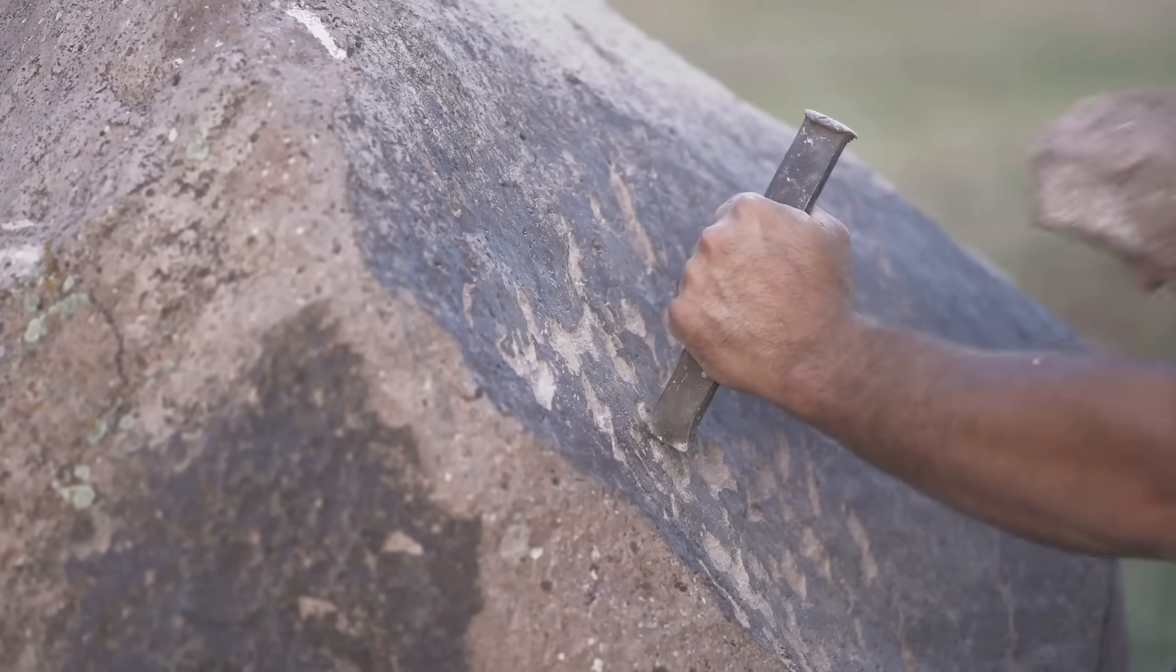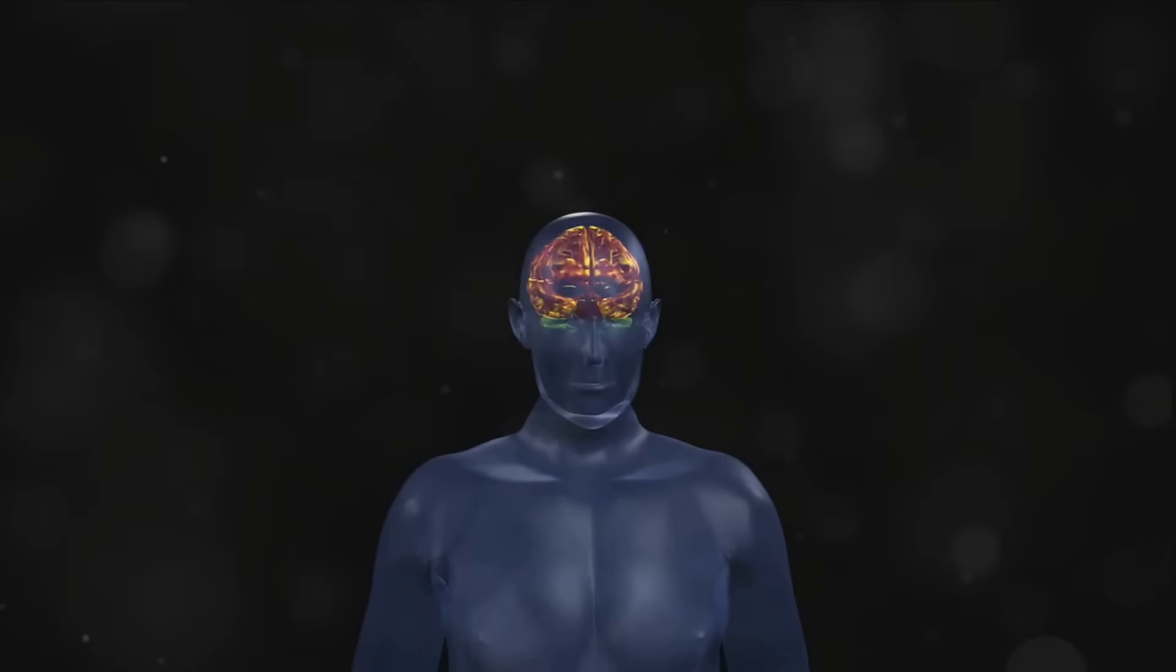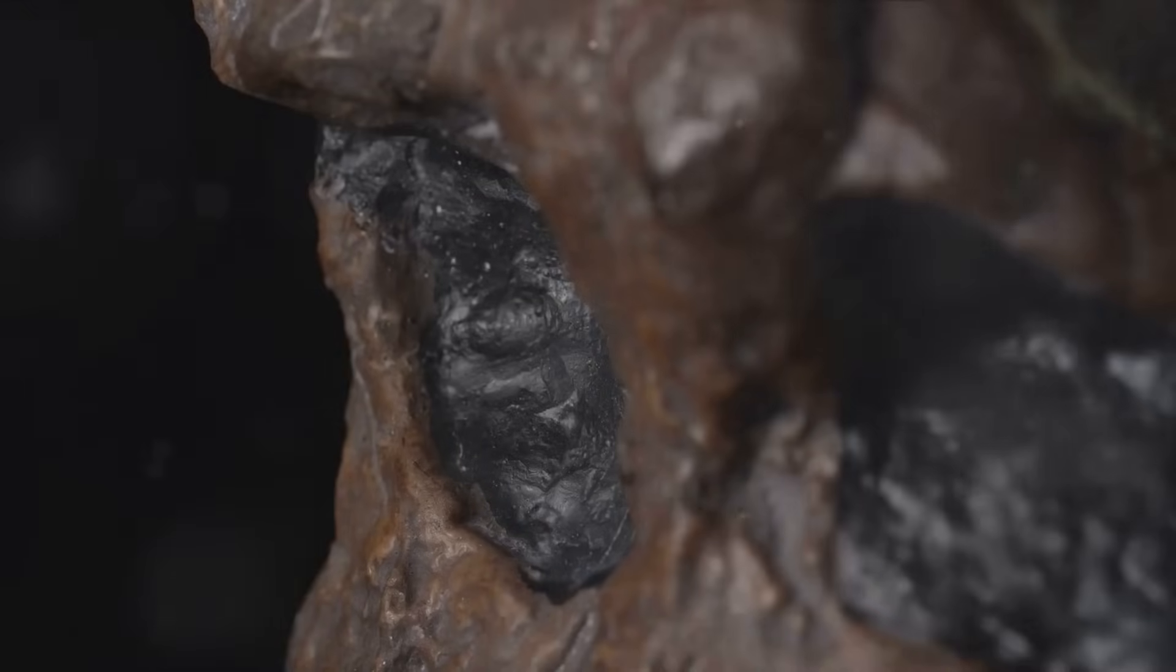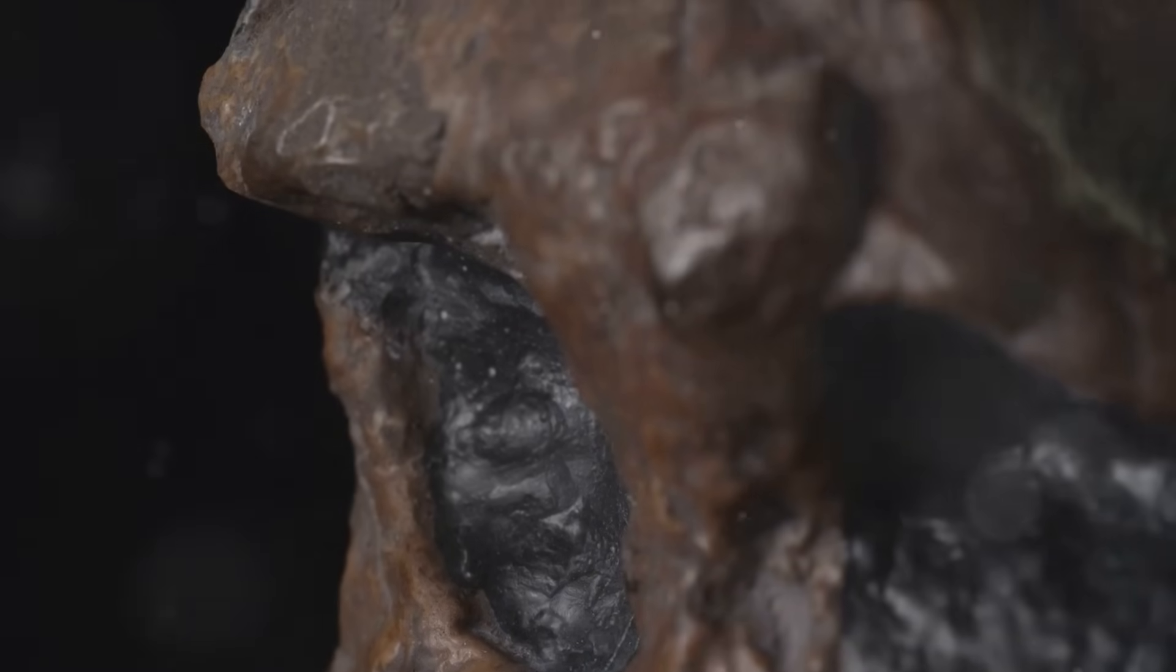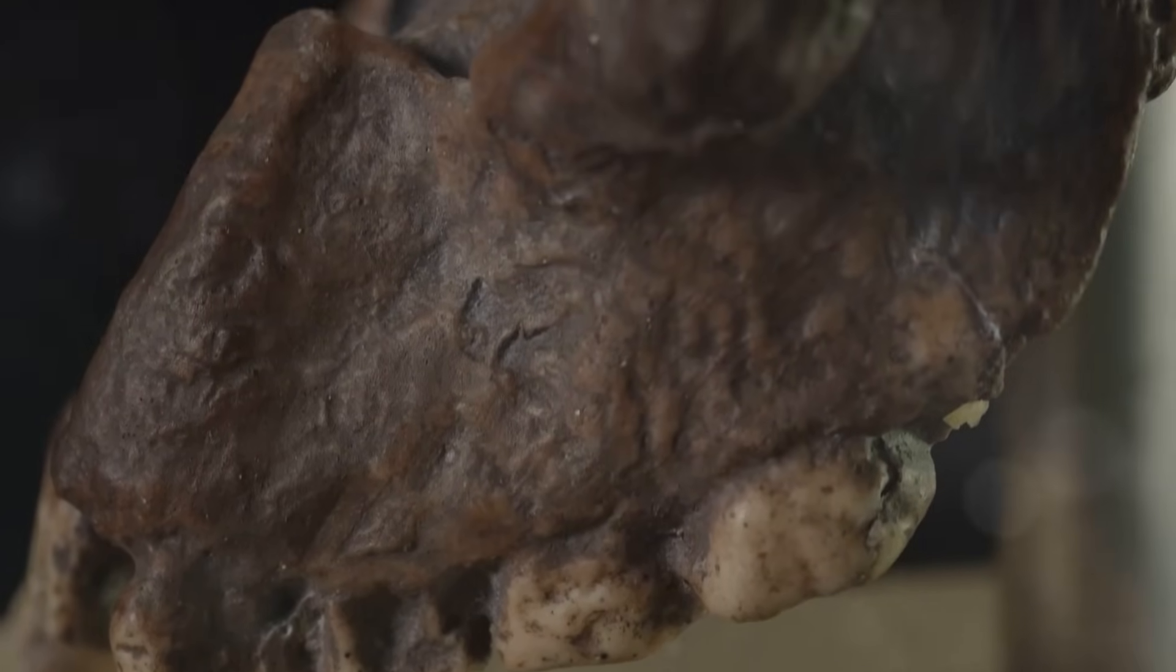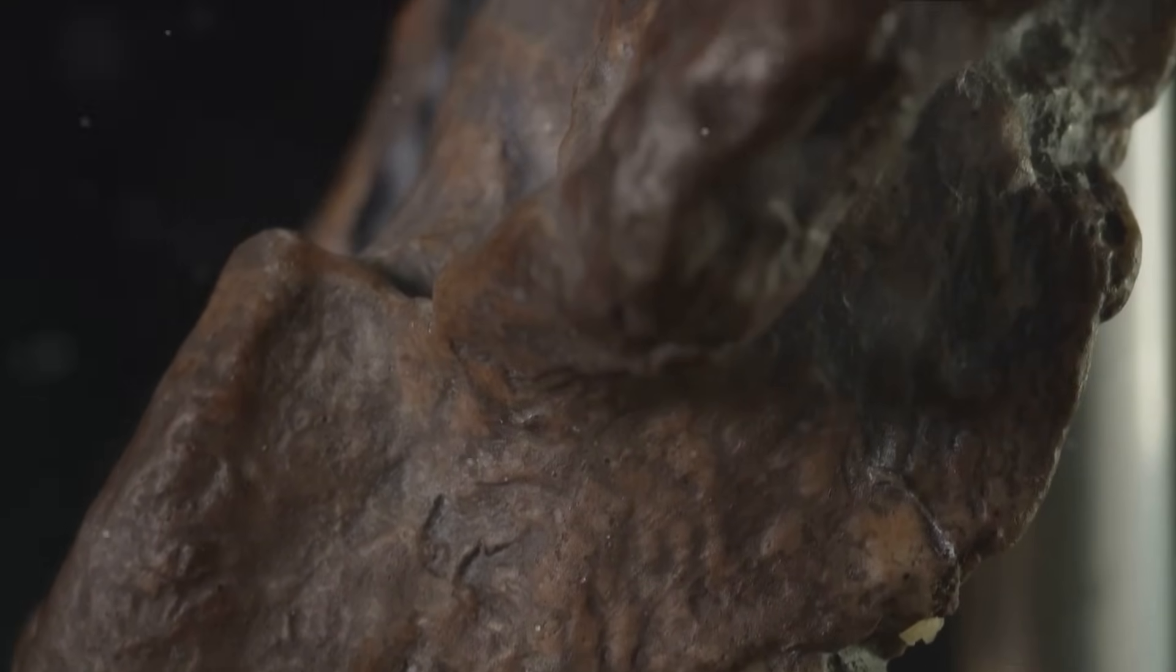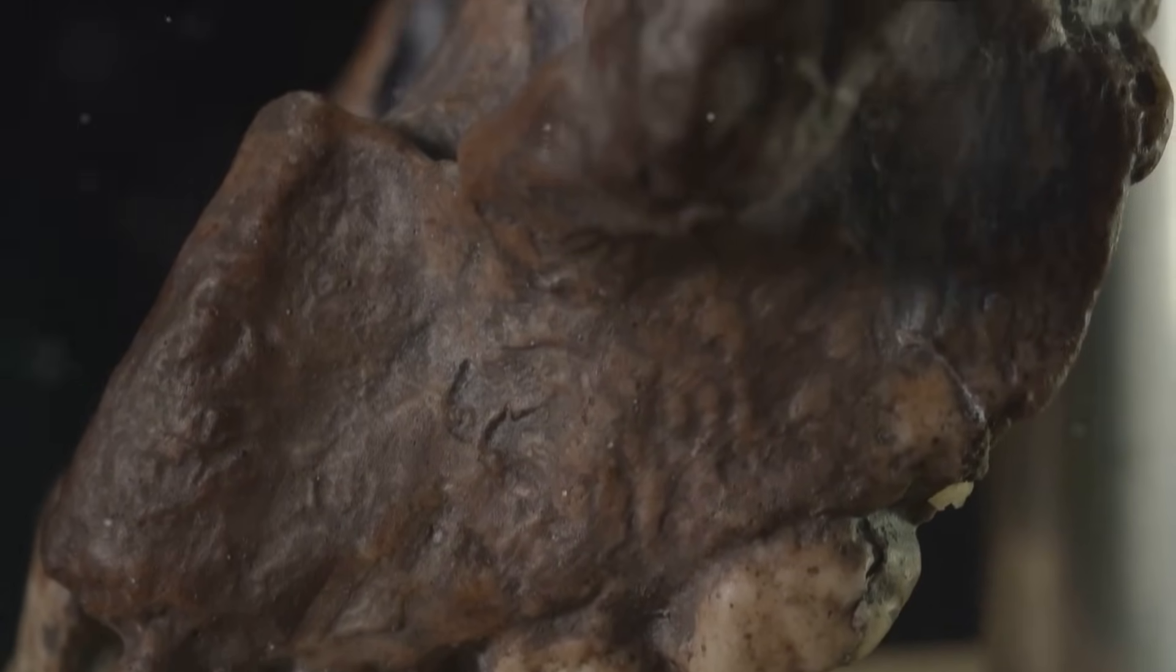As we trace the timeline further, we encounter another crucial change. There was a dramatic increase in brain size. Australopithecus, an early hominid species, had a brain that was about one-third the size of modern humans. However, as we move forward to Homo habilis and Homo erectus, we see this size nearly double. This growth in brain size is thought to have led to advancements in cognitive abilities, such as problem-solving and communication.